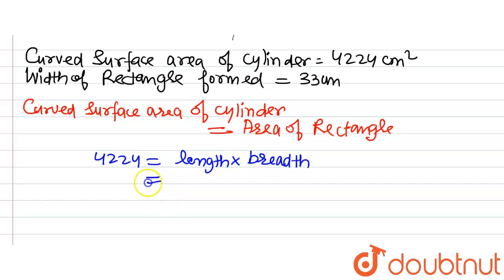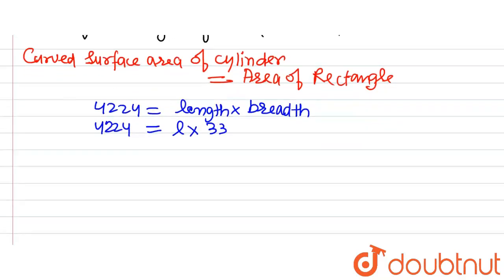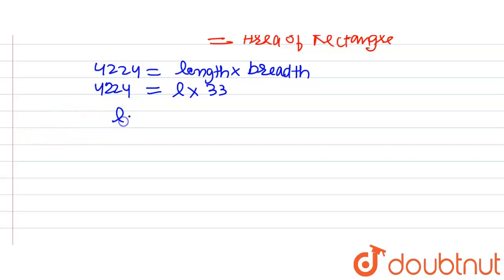So here length we have taken to be l and breadth is 33, which is equal to 4224. On solving it further we will get l = 4224 ÷ 33 which will be equal to 128 cm. So this is the length of the rectangle.